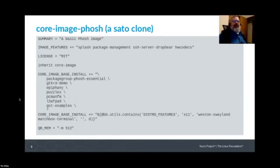Core-image-phosh is what we currently use as our standard GUI build on the autobuilder, exercising a lot of different packages — much more than just core-image-minimal. It's not as complicated as the core-image-sato recipe, but it includes the packagegroup-phosh-essential, GTK+ demo, Epiphany web browser, the games from puzzles, Leafpad, and so on. If you're building with X11, Phosh currently requires XWayland, so it will build in XWayland and the Matchbox terminal.